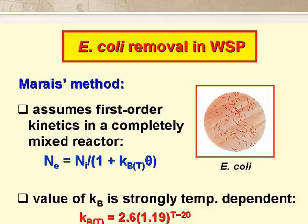The first equation on the slide is the usual first-order equation for E. coli removal in a completely mixed reactor. The second equation is Marais' empirical equation for the variation of the first-order rate constant for E. coli removal, Kb, with temperature. Its value is strongly temperature-dependent, changing by 19% for every 1 degree C change in temperature.